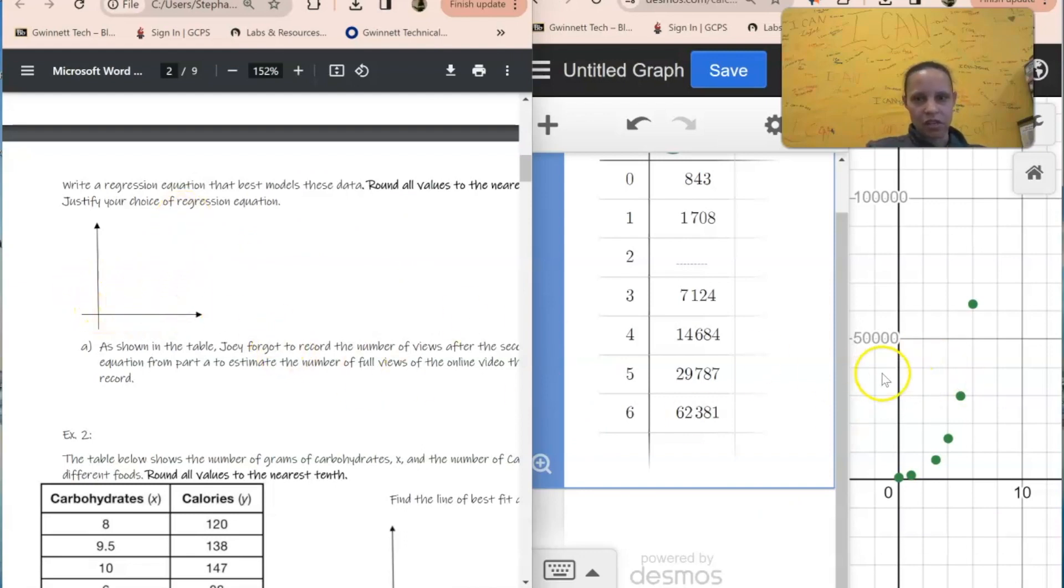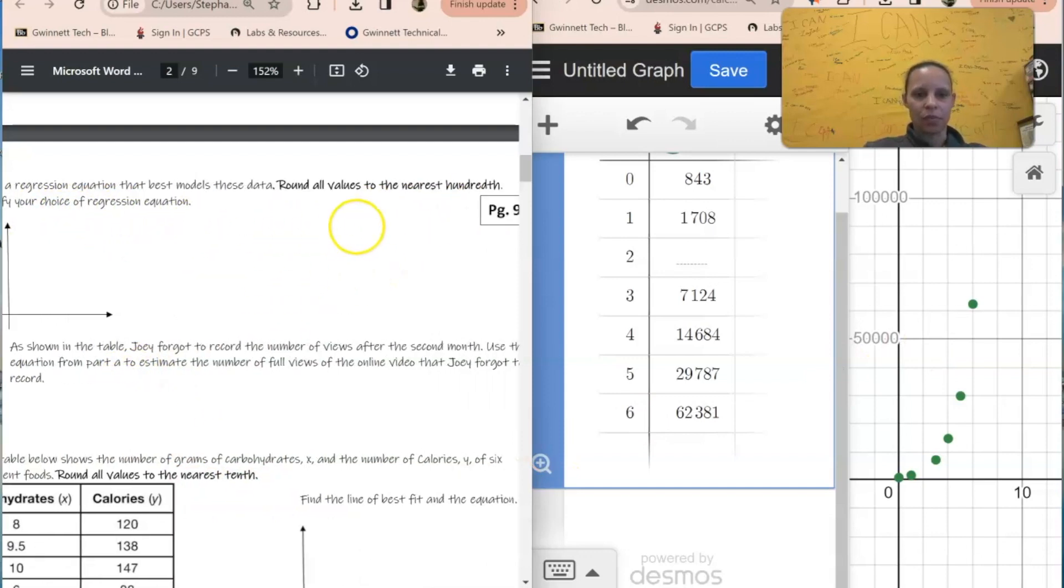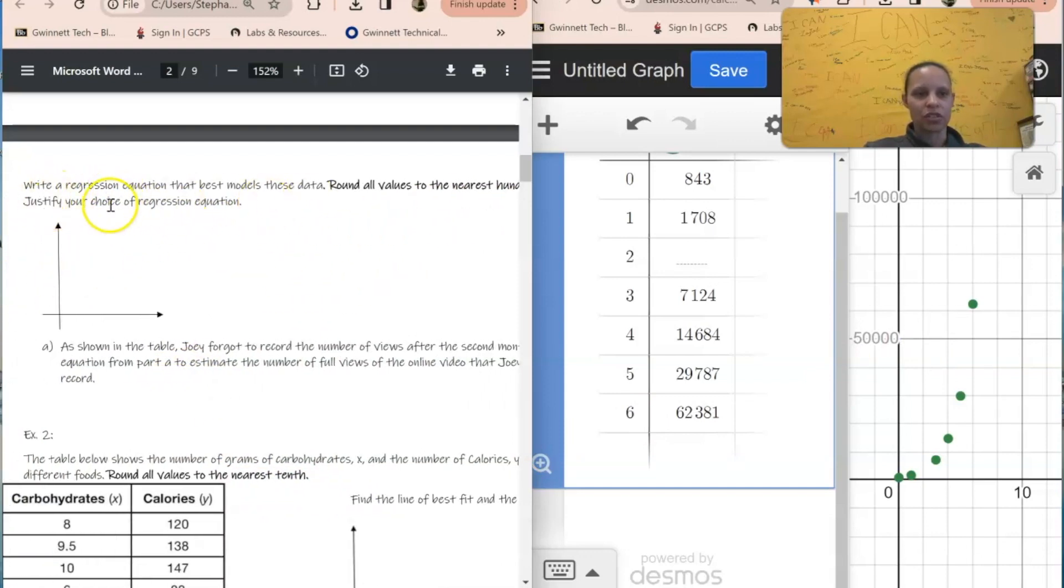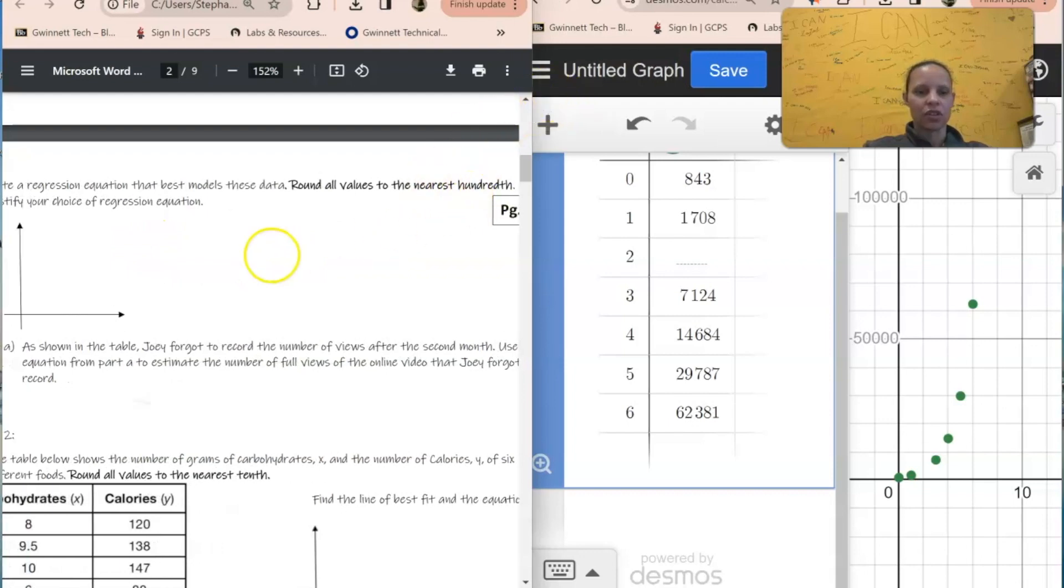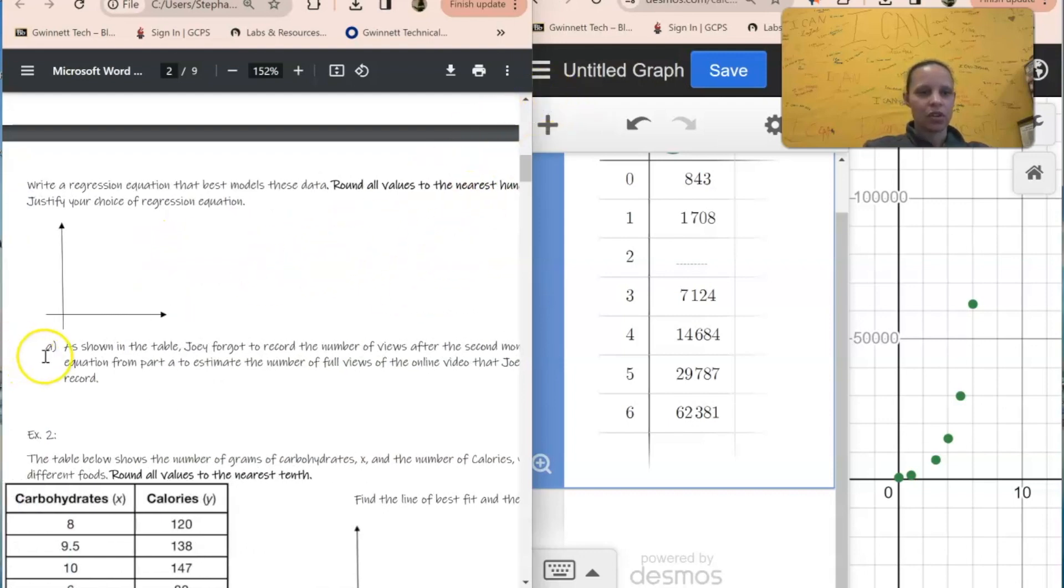You'd graph it here, so again you'd graph it looking like this, just like it does. Write in decimals, and then answer the question. It says justify choice of regression - why did you choose whatever equation you choose? And then round your values to the hundredths. You're going to put that right here.